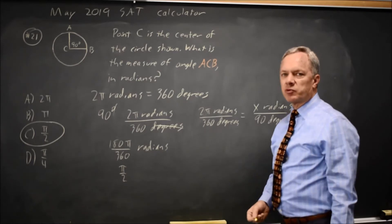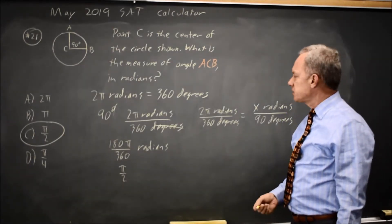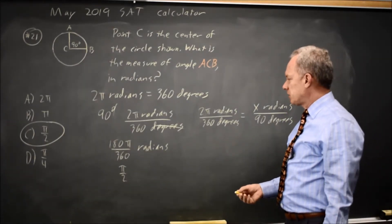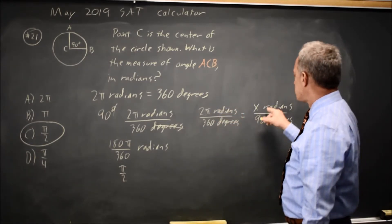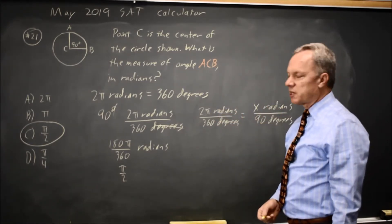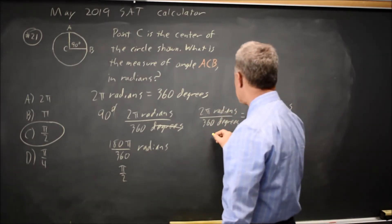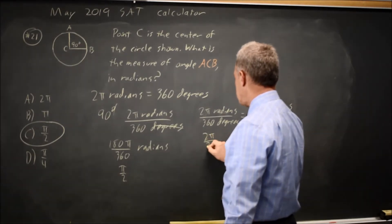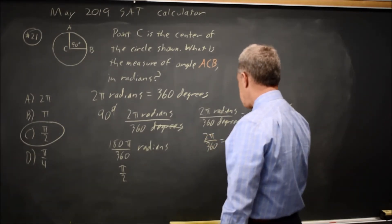Now I like setting up the ratios like this complete with units, so I know I haven't flipped one of them. So I have radians over degrees equals radians over degrees. That's how we set up a proportion. And now I can ignore the units: 2 pi over 360 equals x over 90.